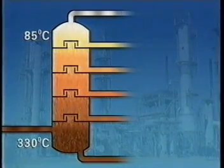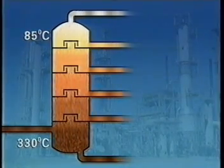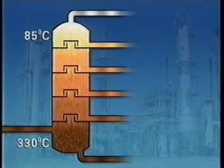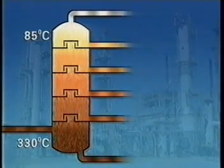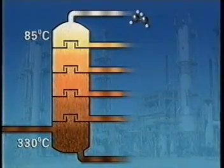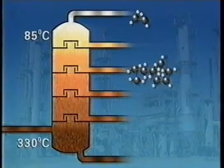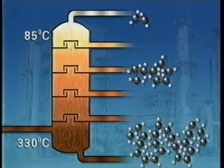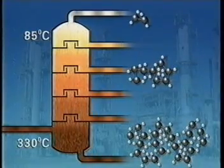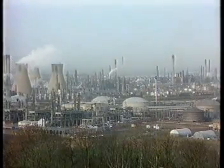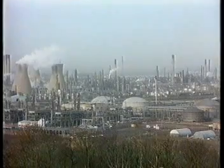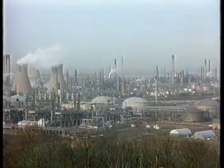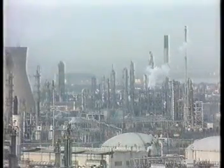Different hydrocarbons condense at different temperatures, running off at various levels. Those with lower boiling points are collected at the top. Those with higher boiling points run off nearer the bottom. The longer the molecules, the higher the boiling point. Industrial distillation separates crude oil into useful fractions, each containing molecules of a similar size.